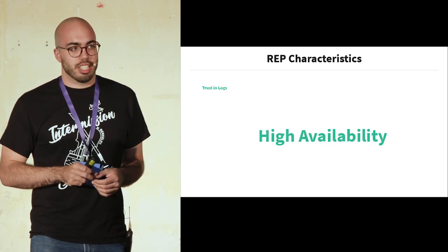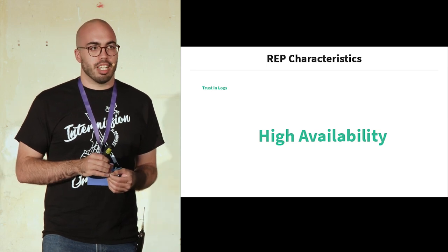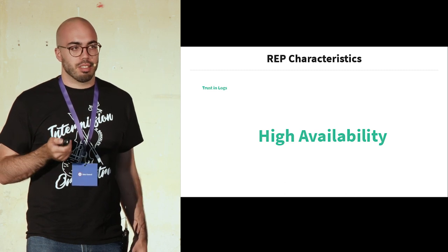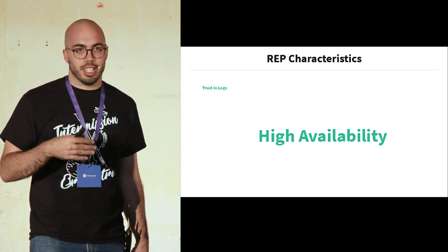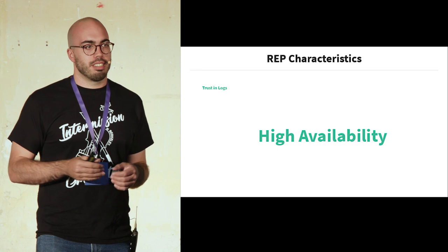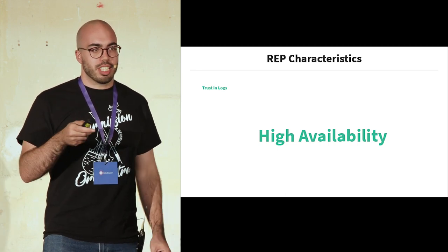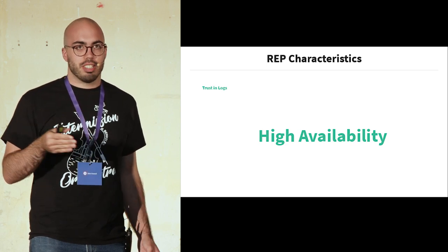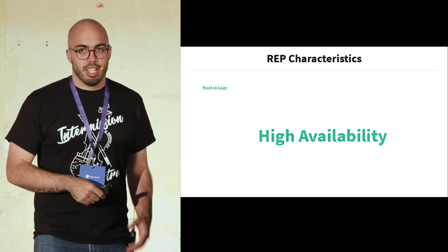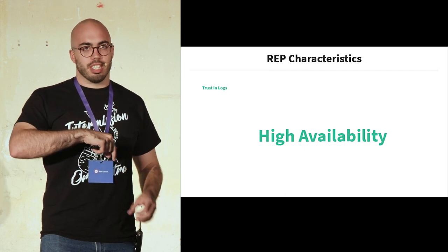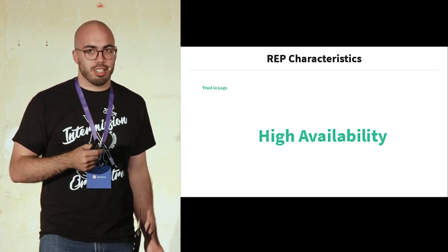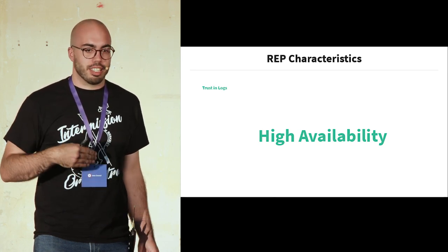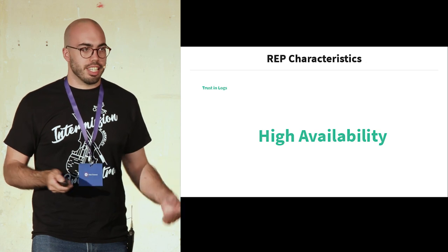We also want high availability in our event pipeline, meaning fault-tolerant protocols and automatic retry on failures. And we want to be able to ingest logs even when parts of the logging infrastructure are offline. We ingest logs into Kafka as a queue, but when Kafka goes offline, we still want to be able to ingest logs — and from the log producer side, nothing should have changed.